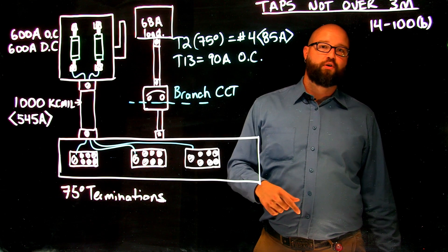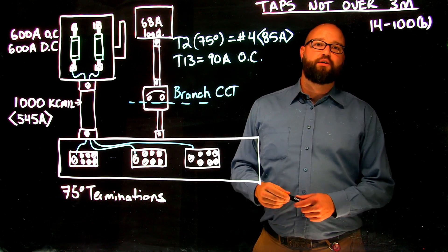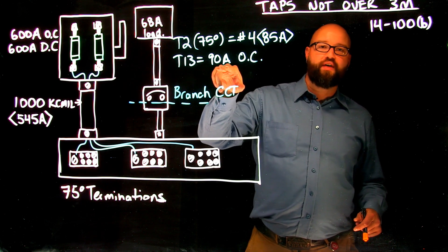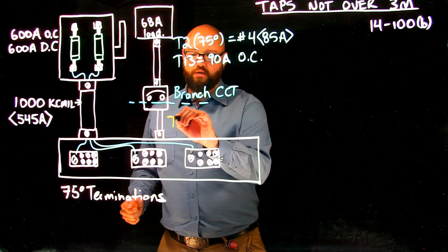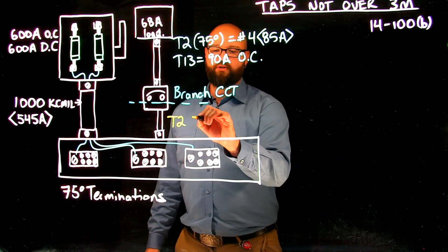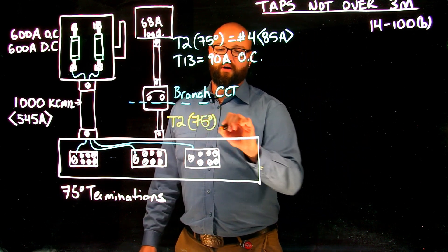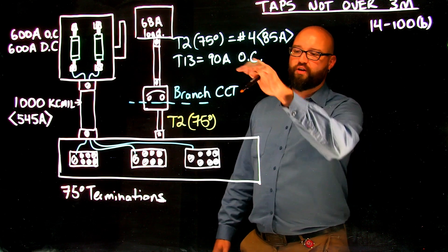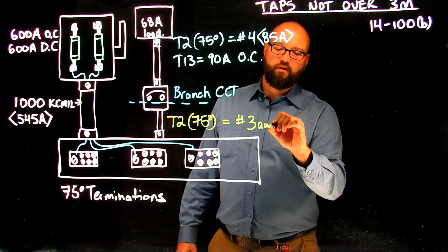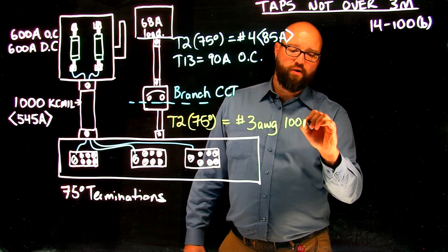So we go to table two, again, 75 degree termination temperature. We are going to select a conductor that is larger than 90 amps, which means we're going to go with a number three AWG, good for 100 amps.